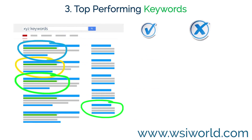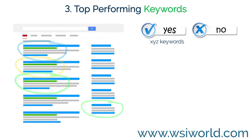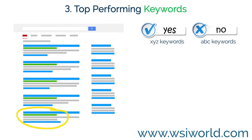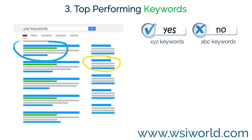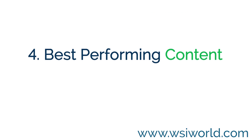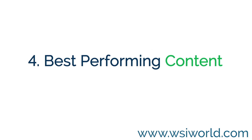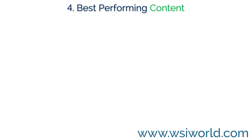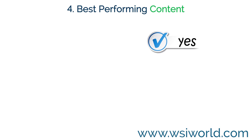Three: top-performing keywords. Once you can identify what keywords your competitors are ranking well for in both organic search and paid ads, you can prepare a list of the top keywords you should be targeting and outperforming them on.